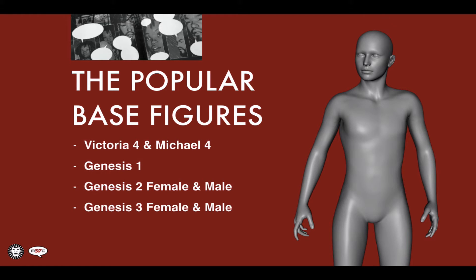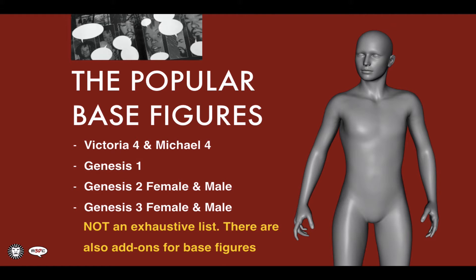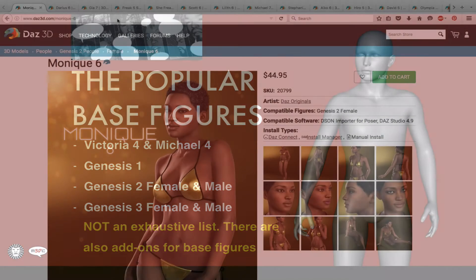I'm going to list some of the more popular base figures. There's Victoria 4 and Michael 4, Genesis 1, Genesis 2 Female and Male — those are two different figures — and Genesis 3 Female and Genesis 3 Male, again two different figures. This is by no means an exhaustive list; these are just the base figures. From these base figures you can get what are called add-ons to customize them, so you don't have to spend an extraordinary amount of time morphing, shaping, tweaking, and customizing.